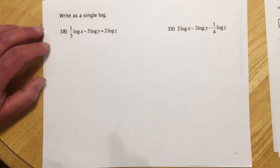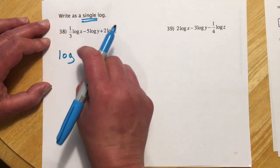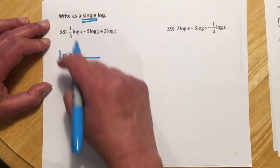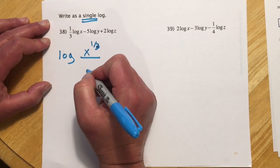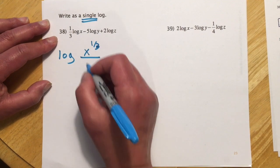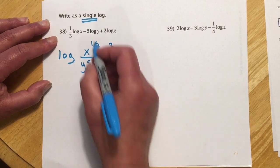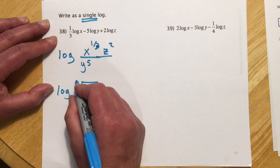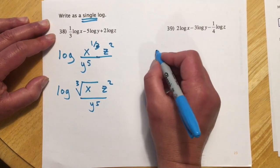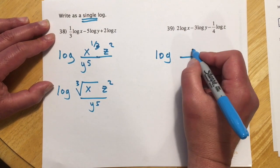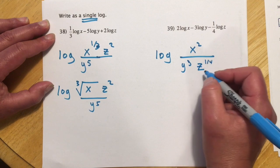For writing as a single log, we go the opposite direction. Write down a single log with a division bar when you see minuses. Don't write separate logs — it's one log with everything happening inside. For 1/3 log x minus 5 log y plus 2 log z: x to the 1/3 — or cube root x — goes upstairs (positive), y to the 5th goes downstairs (negative), and z squared stays upstairs (positive). For problem 39: log with x squared upstairs, y cubed downstairs, and z to the 1/4 — equivalently the fourth root of z — in the denominator.